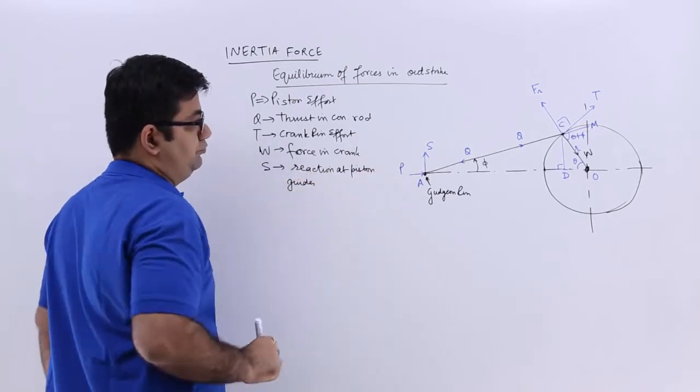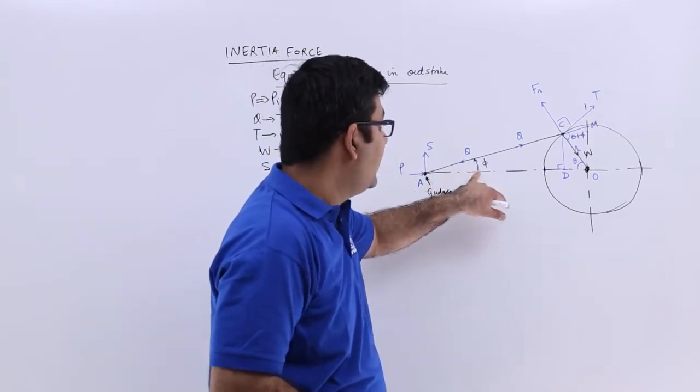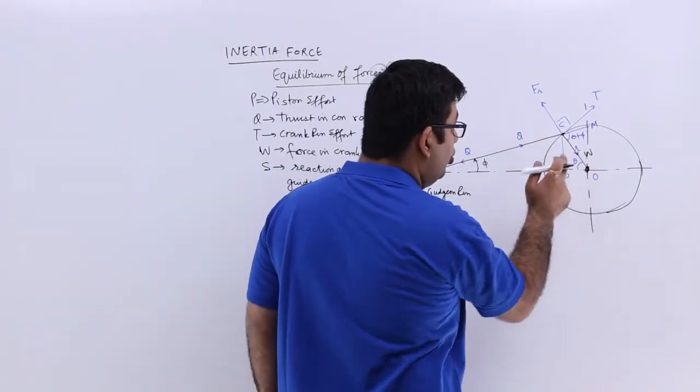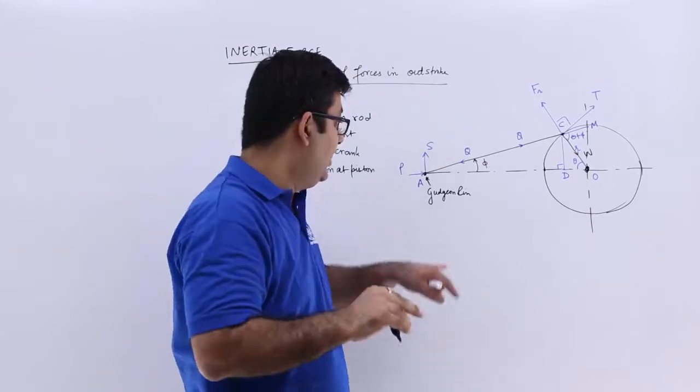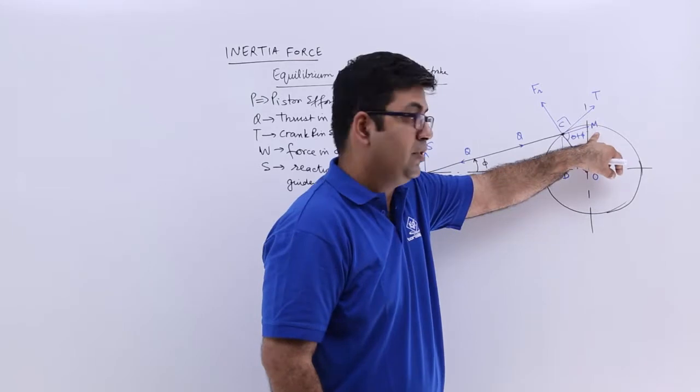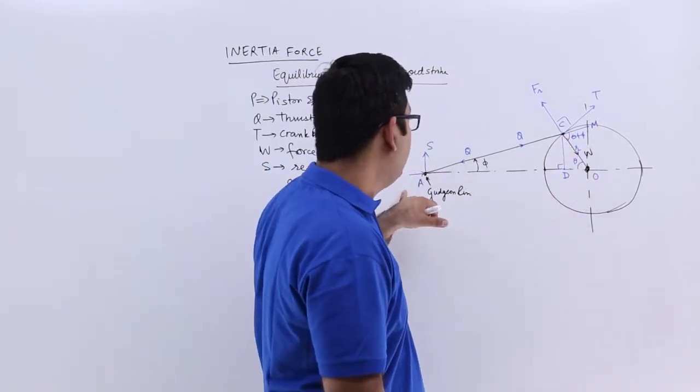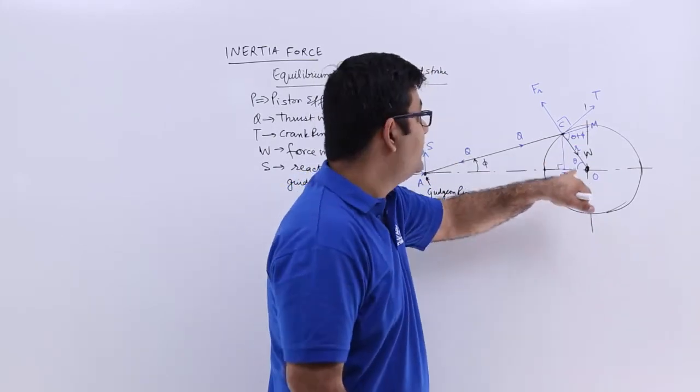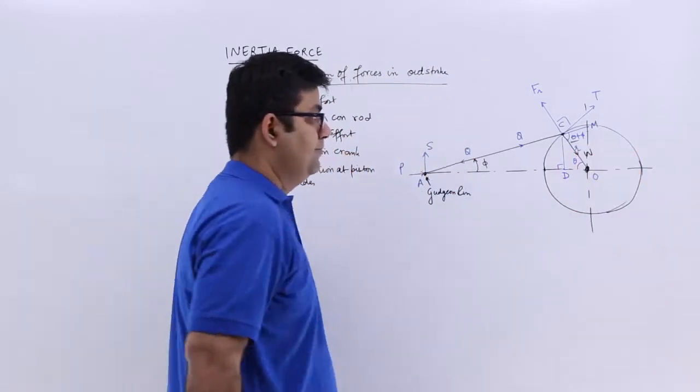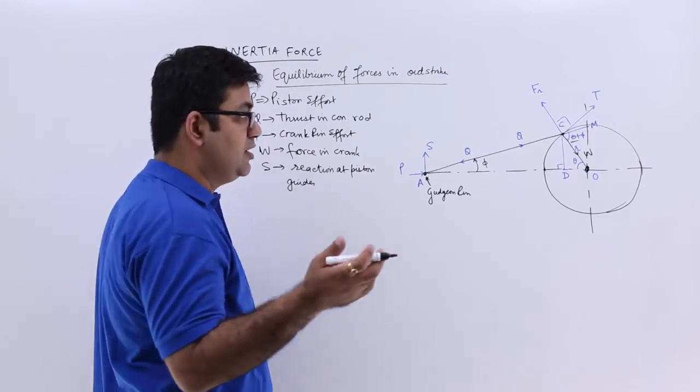Now have a look over here. This angle is phi and this angle is theta. So if I take the entire triangle ACO and I extend the line AC to meet this axis at M, this angle is phi, this angle is theta, so this is theta plus phi. That is the exterior angle of the triangle ACO and that is the sum of the interior opposite angles. So I hope that is very basic geometry.